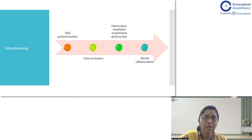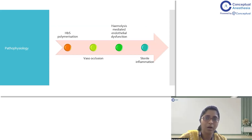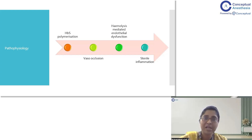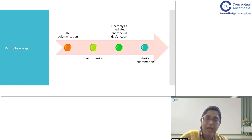The primary pathophysiology has four components. The first is HbS polymerization. The second is vaso-occlusion following HbS polymerization and hemolysis-mediated endothelial dysfunction. The last is sterile inflammation.